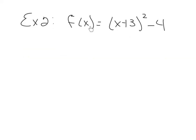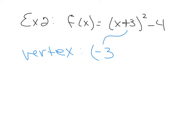Example 2: f(x) equals x plus 3 squared minus 4. We're going to find the vertex by inspection, so we're not going to graph it. The horizontal shift affects the x-coordinate, and the x-coordinate of the vertex has the opposite sign of the function. Since this is a plus sign, the x-coordinate is negative 3, and the y-coordinate comes from outside with the same sign. So the vertex is at (−3, −4).